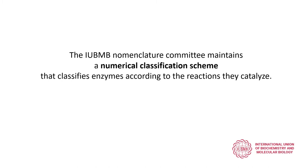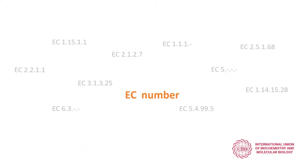The Nomenclature Committee of the International Union of Biochemistry and Molecular Biology maintains a numerical classification scheme that classifies enzymes according to the reactions they catalyze. In this classification, enzymes are associated with a code called EC number, which consists of the letters EC followed by four numbers separated by periods.